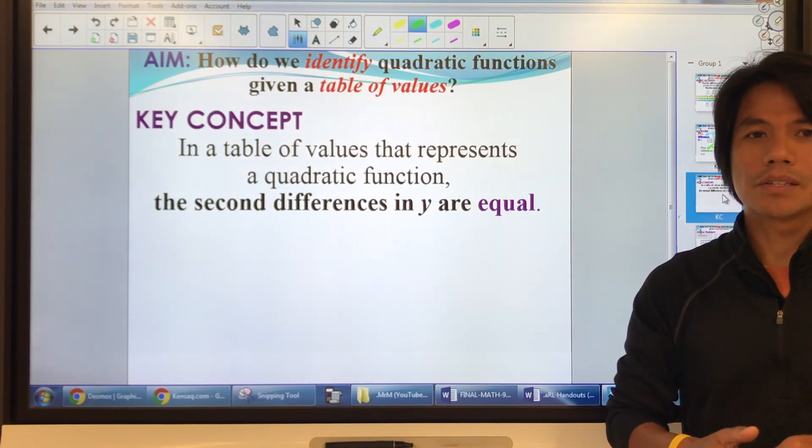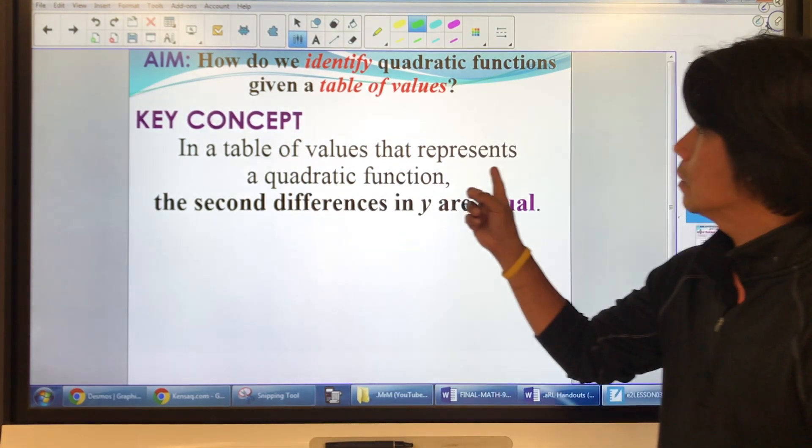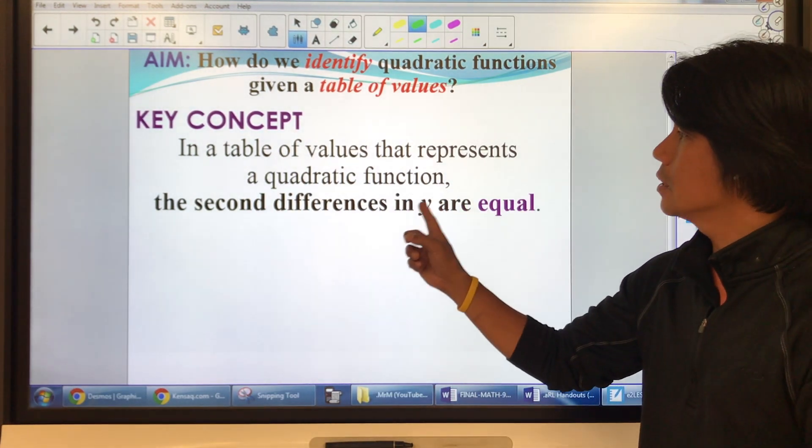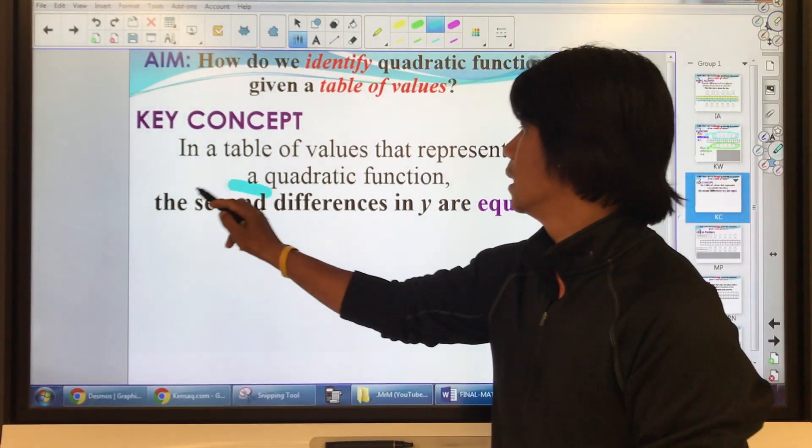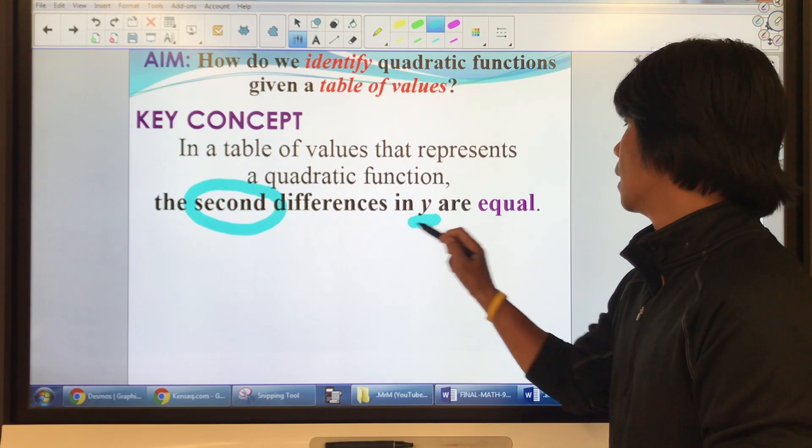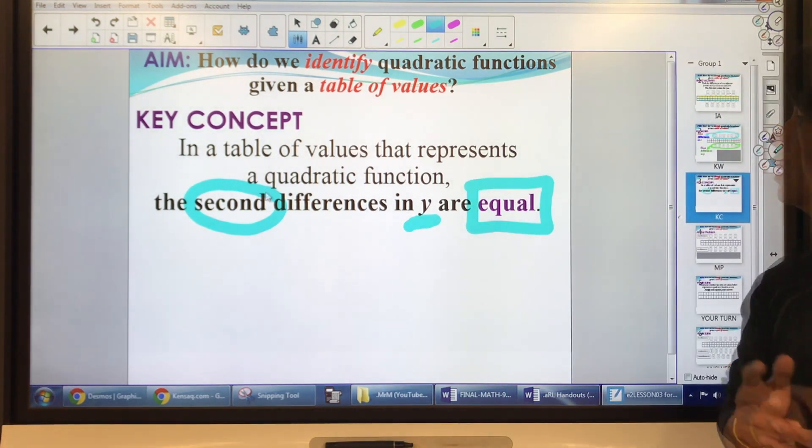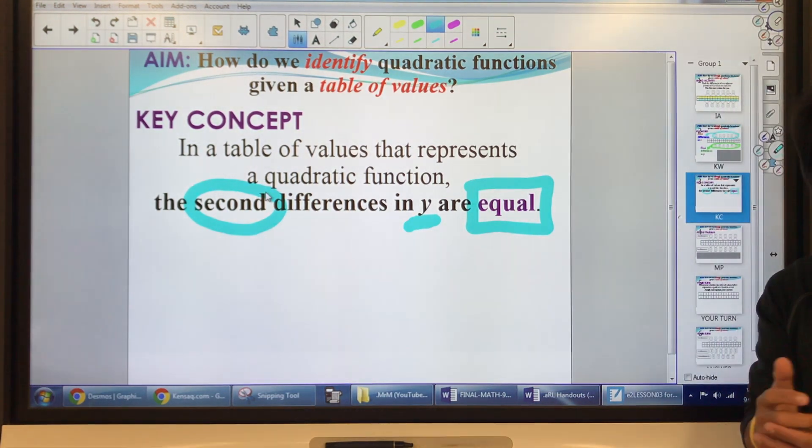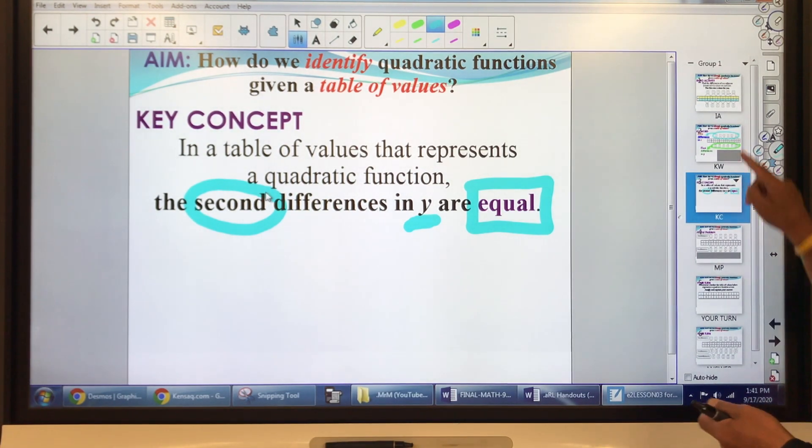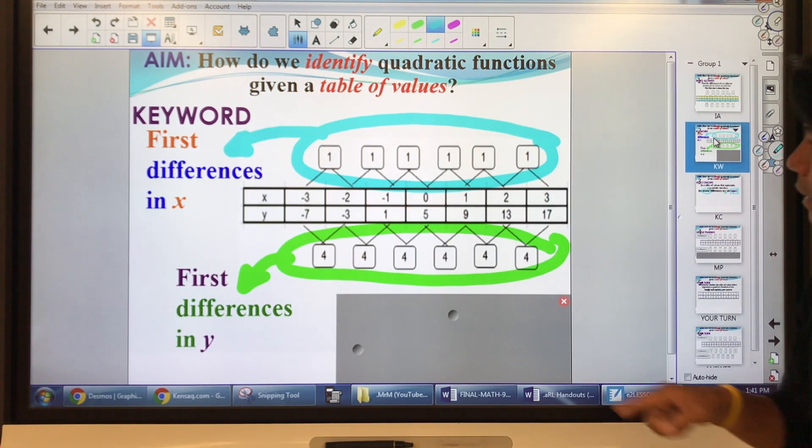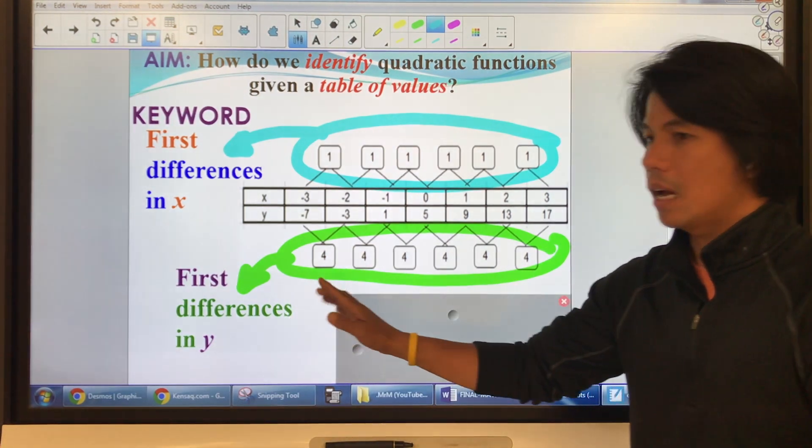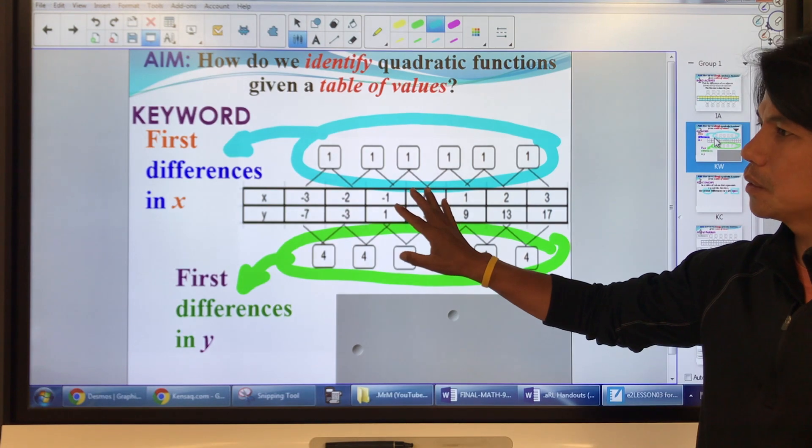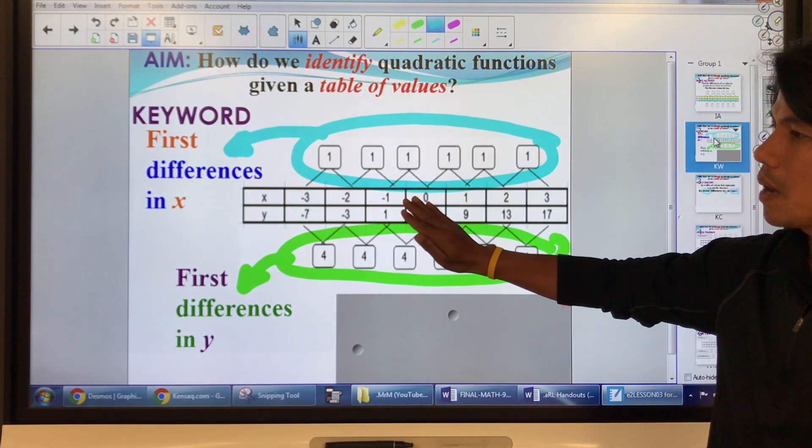Now let's go to the key concept. In the table of value that represents a quadratic function, the second differences in y are equal. So we need to find the second differences in y. Now going back here, it's already equal on the first differences. Now the question is, is this a quadratic, does this represent a quadratic function?